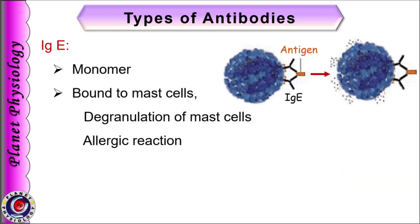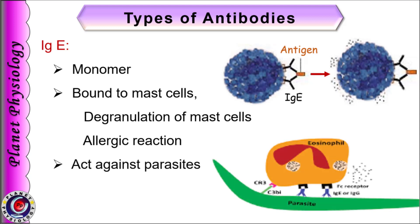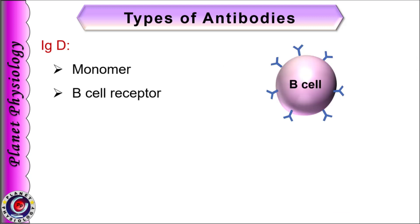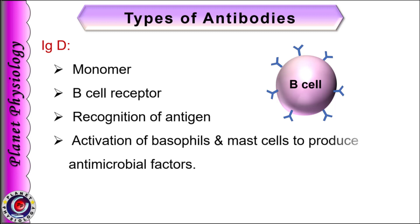IgE is also a monomer and is usually bound to mast cells. Whenever allergens bind to its variable region, it triggers degranulation of mast cells leading to release of histamine, and thus it is involved in allergic reactions. IgE also activates eosinophils and acts against parasites. IgD is also a monomer and acts as a surface receptor on B-lymphocytes, thus involved in antigen recognition. It has also been shown to activate basophils and mast cells to produce antimicrobial factors.